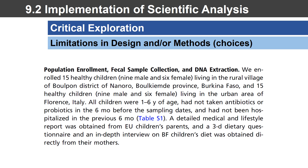The materials and methods begin with population enrollment, fecal sample collection, and DNA extraction. These are the very first steps in conceptualizing this work — establishing how the poop was going to be collected, since that's where you find the gut microbes, and how the DNA was going to be extracted from those samples to identify the bacterial species.